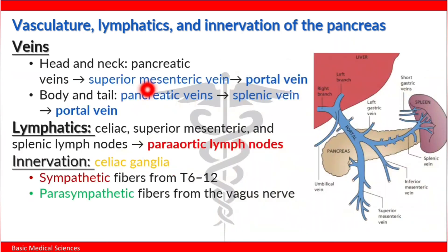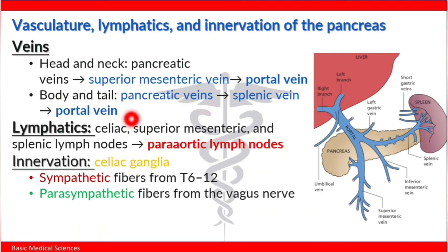The veins: the head and neck are drained by pancreatic veins which drain into the superior mesenteric vein and then to the portal vein. The body and tail are drained by pancreatic veins which drain into the splenic vein and the portal vein. Lymphatics include the celiac, superior mesenteric, and splenic lymph nodes, which drain into the para-aortic lymph nodes.